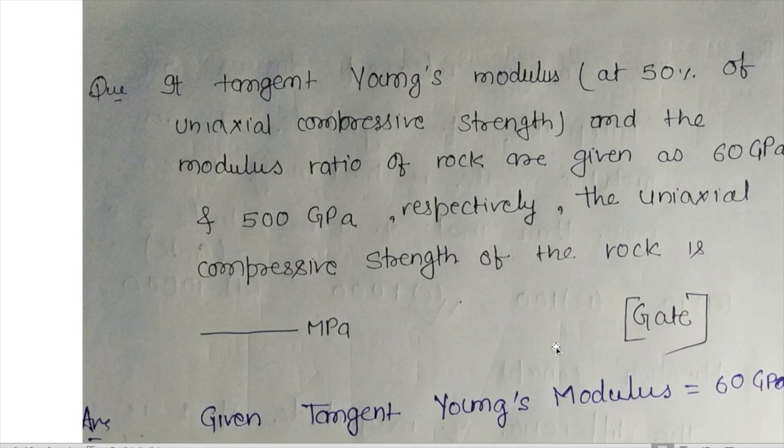Moving to the next question: if the tangent Young's modulus at 50% of uniaxial compressive strength and the modulus ratio of the rock are given as 60 GPa and 500 respectively, find the uniaxial compressive strength. The tangent Young's modulus is 60 GPa.